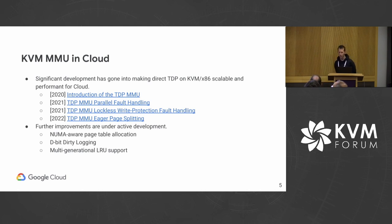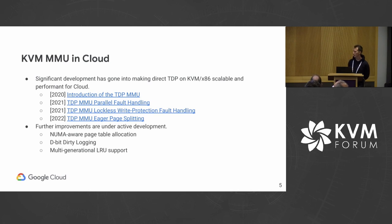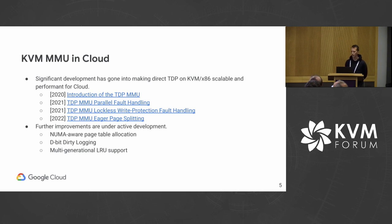We also added handling of write protection faults for dirty logging without taking the MMU lock — this actually dates back to almost 2012 in the x86 shadow MMU. And support for eager page splitting, which is when at the beginning of dirty logging, the page tables are split down to 4K entries eagerly in the background rather than lazily at fault time. More development is underway: we're working on NUMA-aware page table allocation, d-bit-based dirty logging so not requiring any faults at all, and support for the multi-generational LRU, which is a new way of doing access tracking in the core MM that requires some integration in KVM.